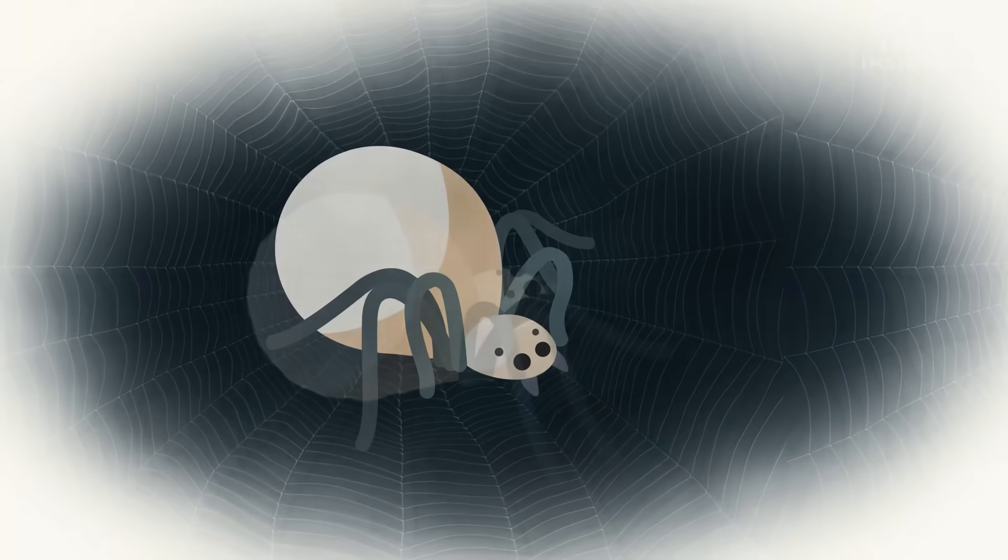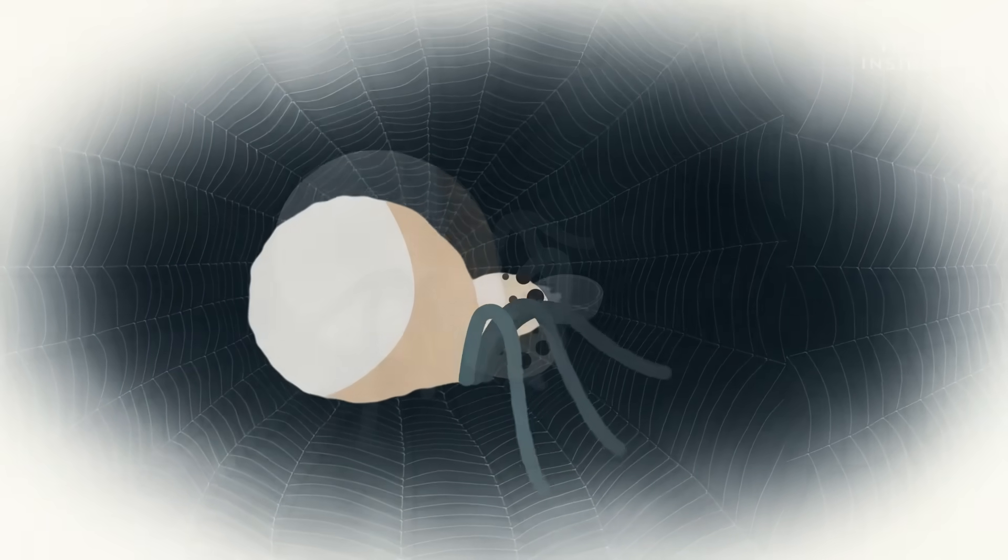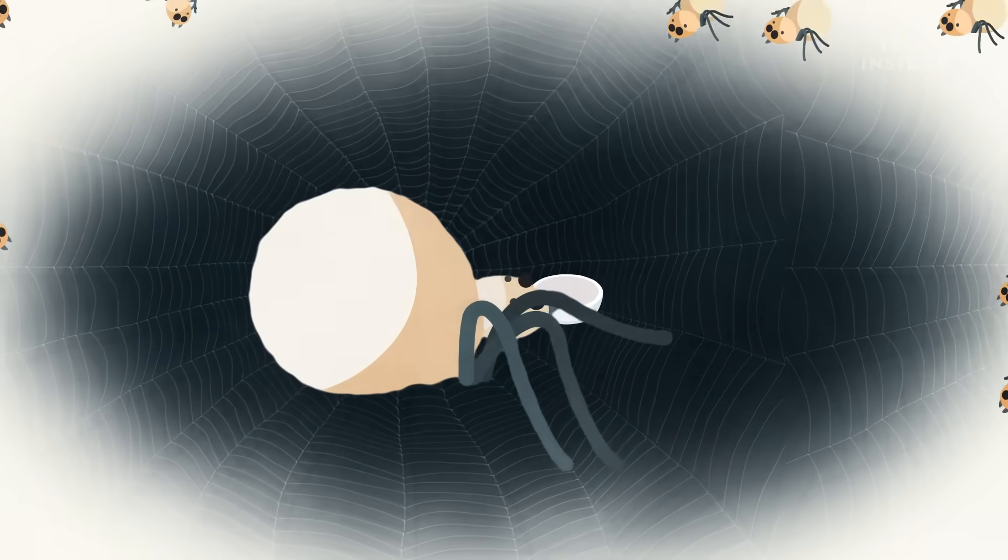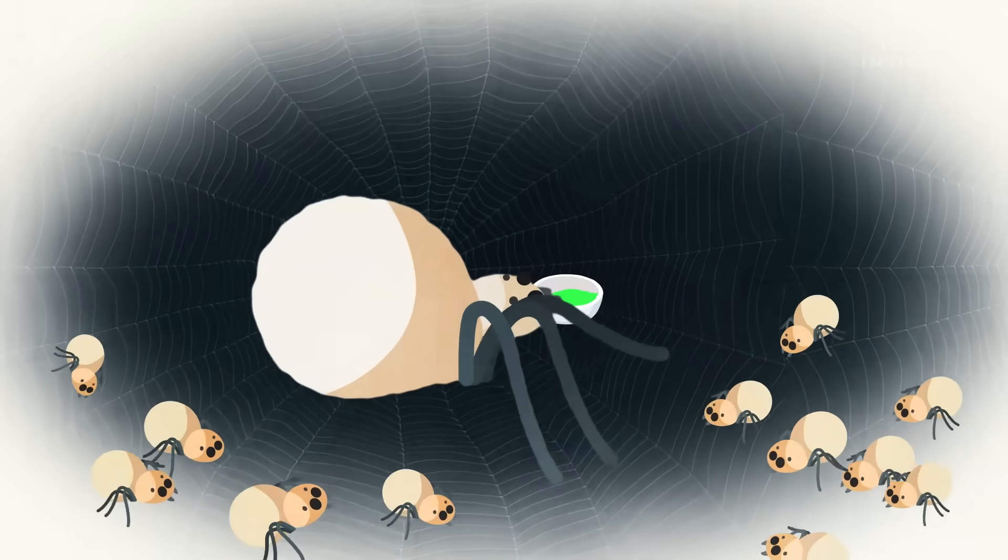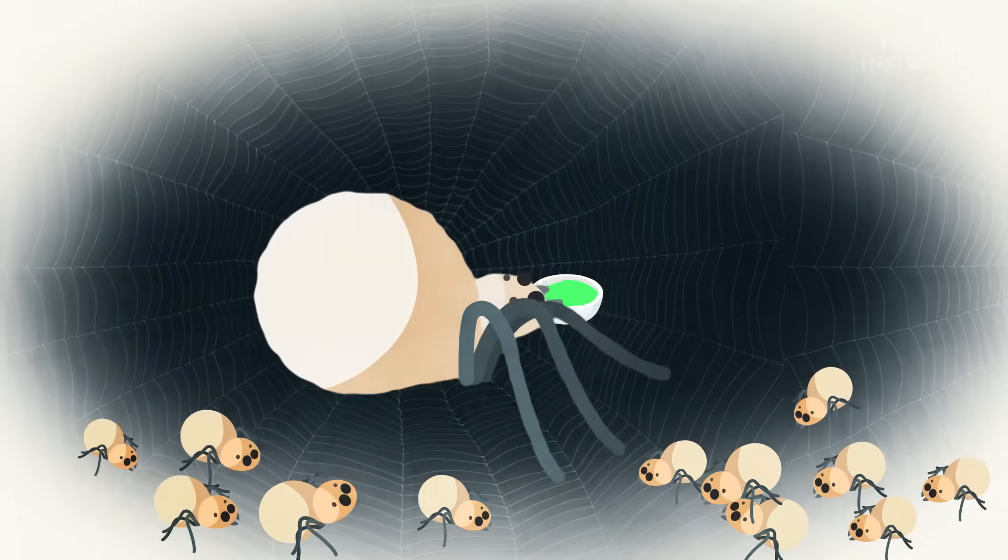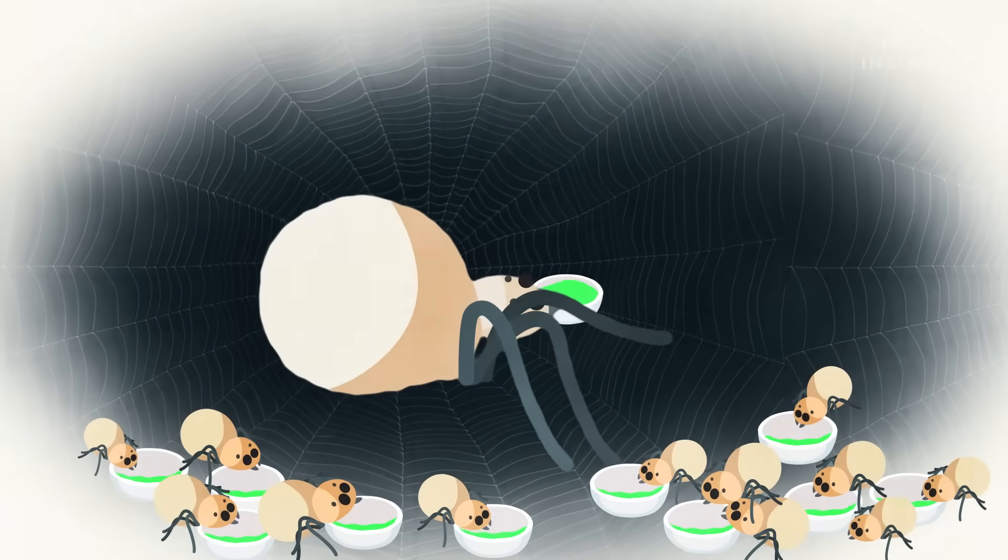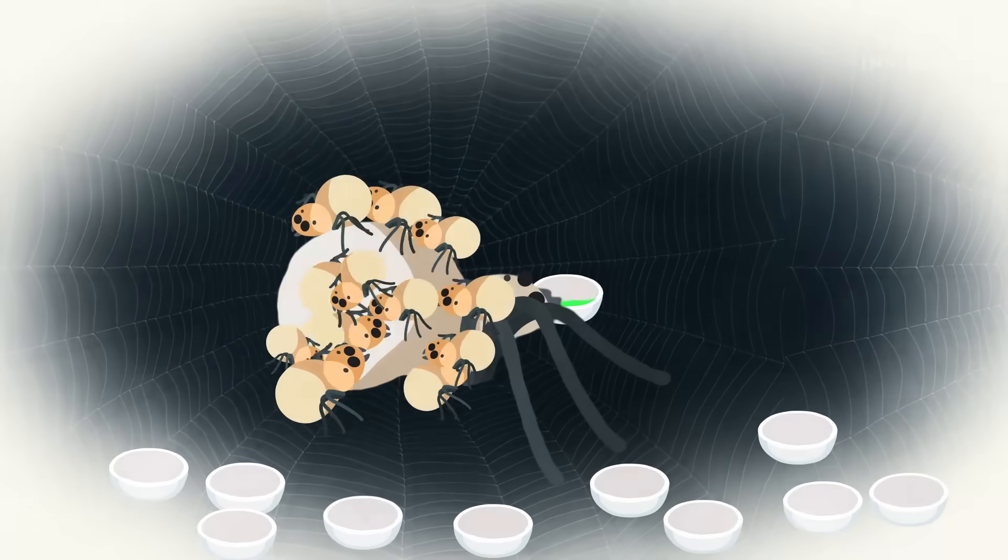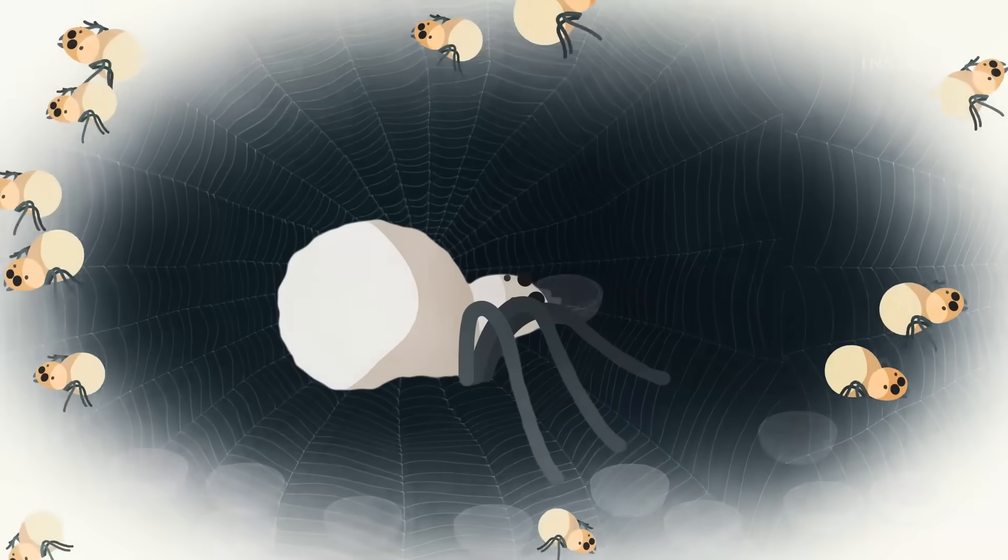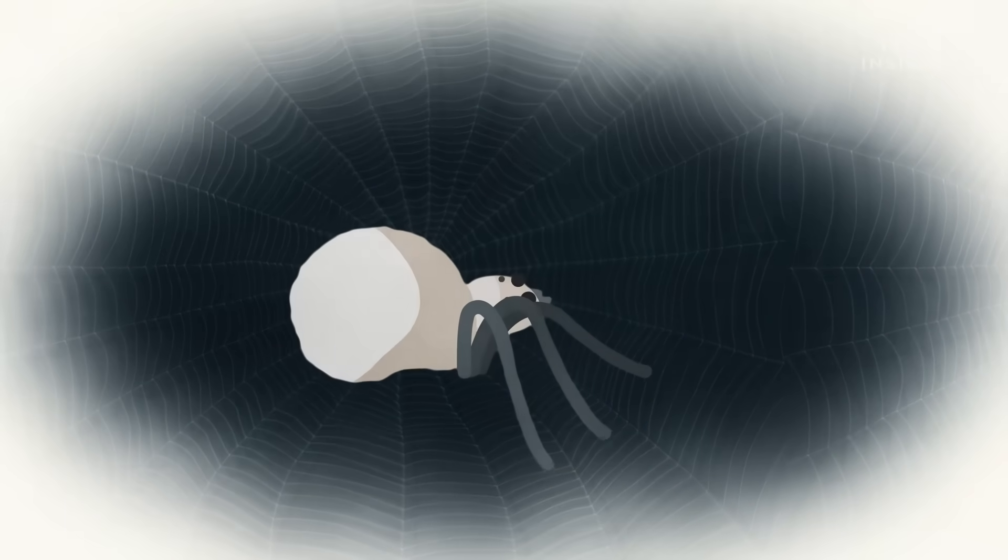Right after she lays an egg sack, the mother's tissues start to degrade. Once the spiderlings hatch, she regurgitates her own liquefied insides, and the babies chow down. Nine days later, they suck up the last of her fluids and strike out on their own, leaving nothing but an empty husk. Thanks, Mom.